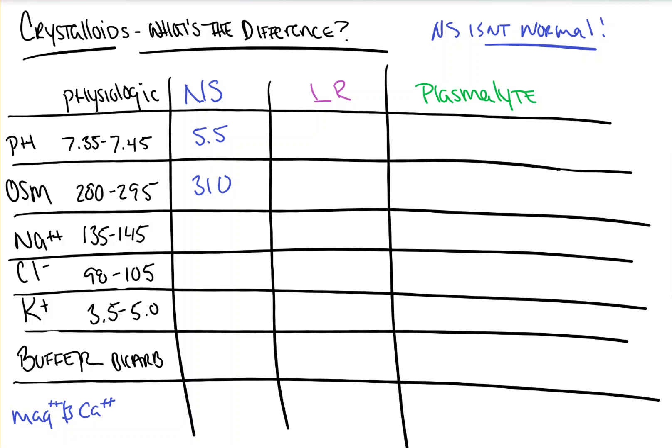Beyond that, it has a sodium and chloride concentration of 154. Again, supra-physiologic, baseline hypernatremic and hyperchloremic in nature. So, what's normal about normal saline? Absolutely nothing.